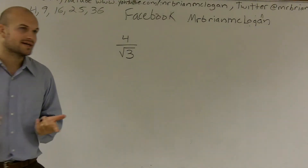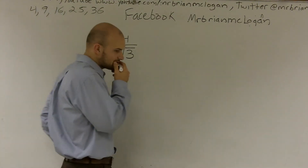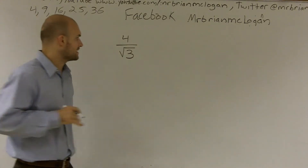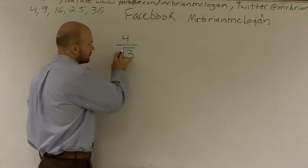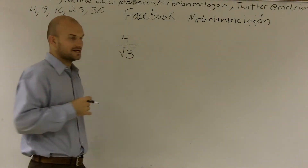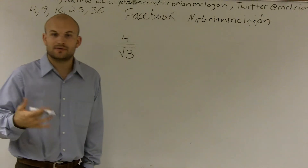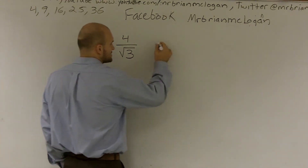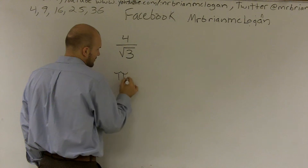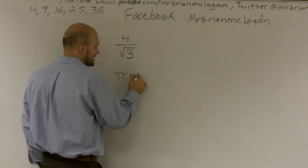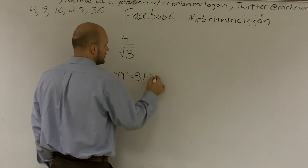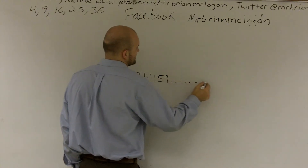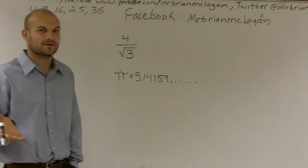The reason why it's a non-simplified answer — think about it this way. Radical 3 is what we call an irrational number, meaning we can't make it as a fraction. Same thing as pi. Pi equals 3.14159... it keeps on going on and on forever.